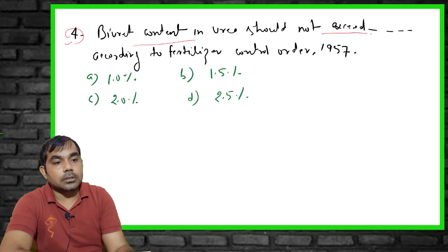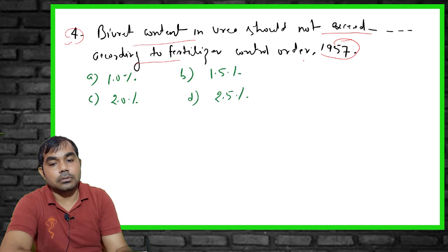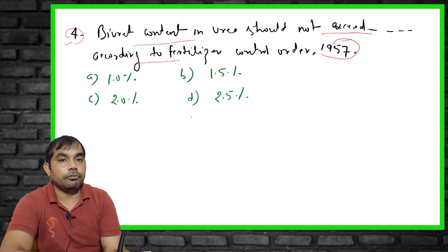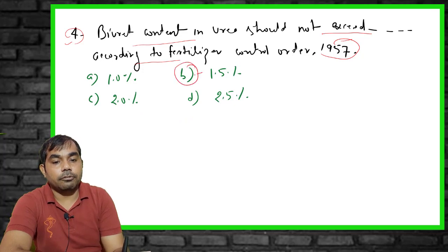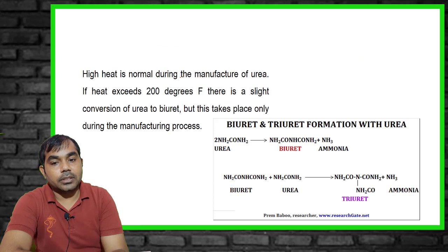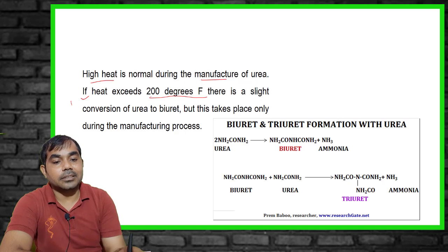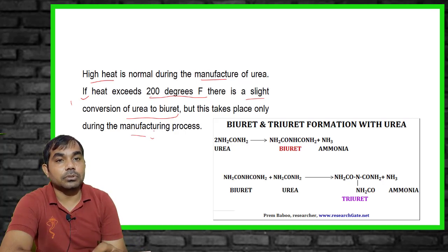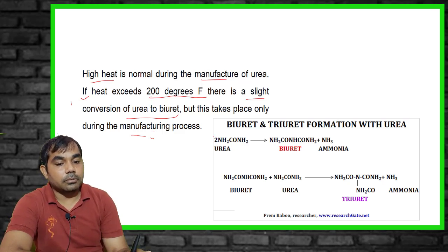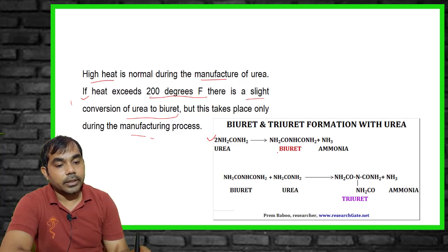The fourth MCQ: according to the Fertilizer Control Order 1957, biuret content in urea should not exceed what percentage? Options are 1, 1.5, 2, and 2.5. The right answer is 1.5%. Biuret forms during the manufacturing process of urea when temperature exceeds 200 degrees Fahrenheit, causing a slight conversion of urea to biuret. This only happens during manufacturing.